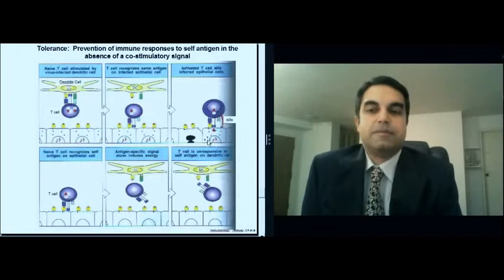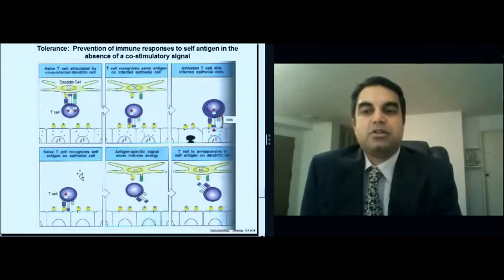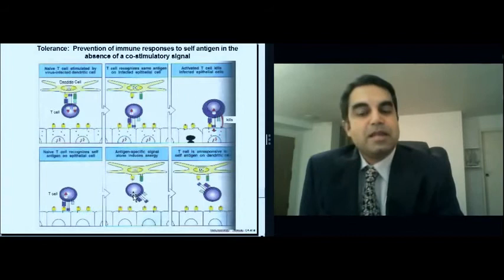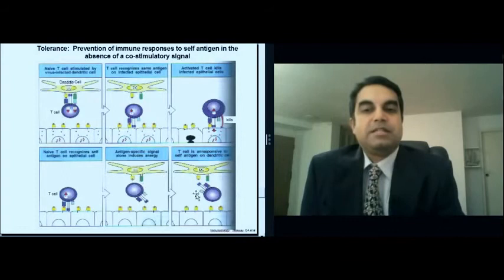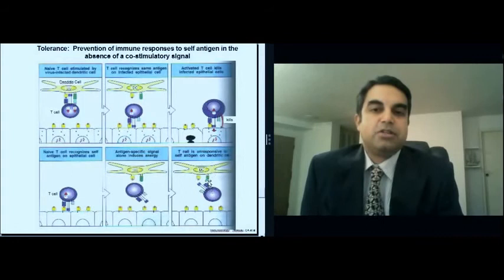By contrast, a naive T cell that recognizes self-antigen on an epithelial cell in the absence of that costimulatory signal will become anergic. And this antigen-specific signal alone makes these cells unresponsive. And this same kind of anergy can also be induced by a dendritic cell that lacks the costimulatory signal. Now, once these T cells are unresponsive, they remain so, even when they encounter self-antigen on a dendritic cell that has that costimulatory signal.